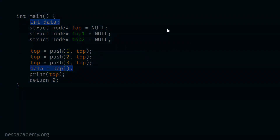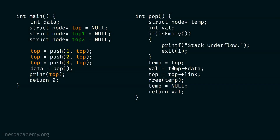This is how our pop function looks, but there is a problem. This pop function works only if we have a top pointer declared globally. It is not receiving top locally — it only uses the global top pointer. But we need to pass top, top 1 and top 2 pointers locally to the function in order to delete the top most element of those stacks. That is why we have to update our pop function.